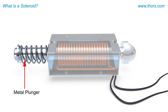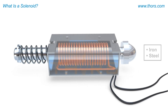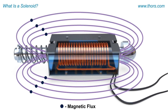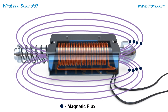A metal plunger is typically made of a soft magnetic material, such as iron or steel, and is designed to efficiently conduct the magnetic flux, which is the amount of magnetic field passing through an area and responding to the magnetic force.